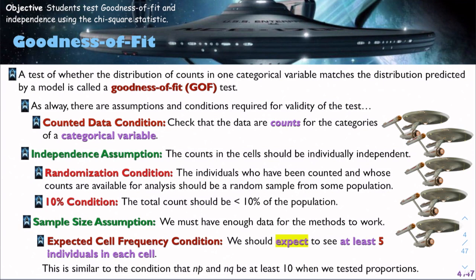As always, there's assumptions and conditions required for validity of the test. In this case, we're looking at the counted data condition. Check that the data are counts for the categories of a categorical variable. Next, we need to check the independence condition. The counts in the cells should be individually independent, which also means that we check for randomization and the 10% condition.